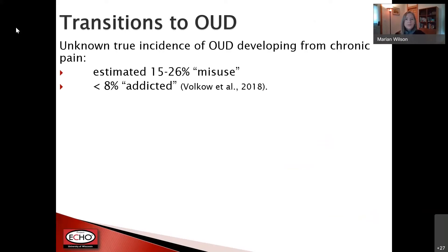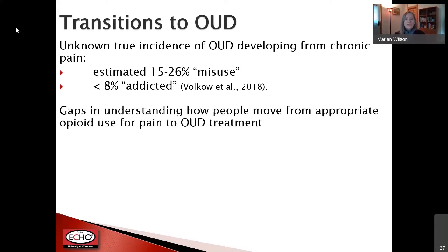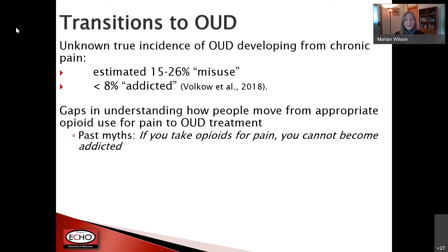When talking about people moving from a pain condition to opioid use disorder, the statistics are messy. It looks like about 15% to 26% will misuse opioids, and about 8% may become truly addicted or have a substance use disorder. We don't fully understand how people move from appropriate opioid use for pain into needing OUD treatment. In my early nursing career working in oncology, the biggest concern from patients was whether they would become addicted to their opioids.